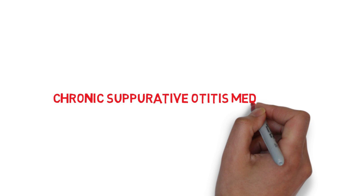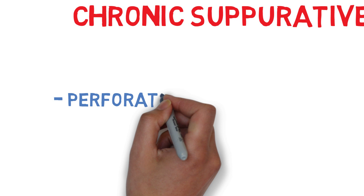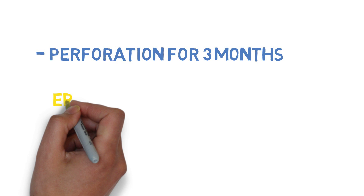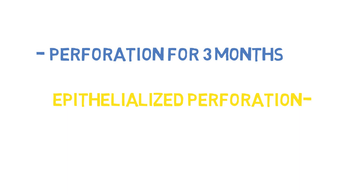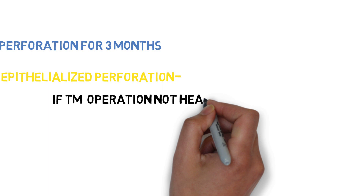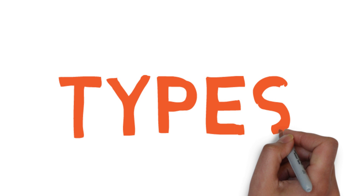Today we are going to learn about Chronic Suppurative Otitis Media, also called Chronic Otitis Media. In this disease there is a long-standing infection of part or whole of the middle ear cleft, characterized by ear discharge and permanent perforation. The tympanic membrane heals within 3 months; if not healed within 3 months, it is called an epithelialized perforation of the tympanic membrane.